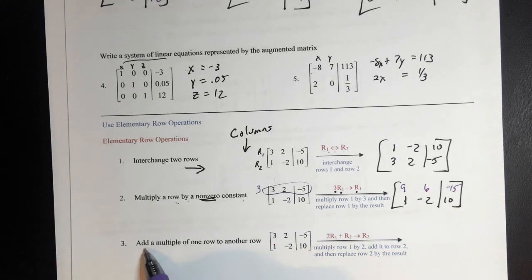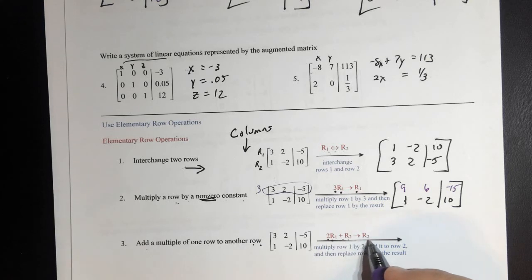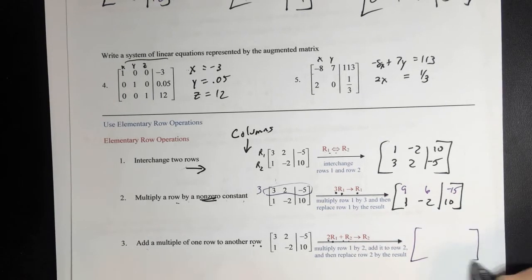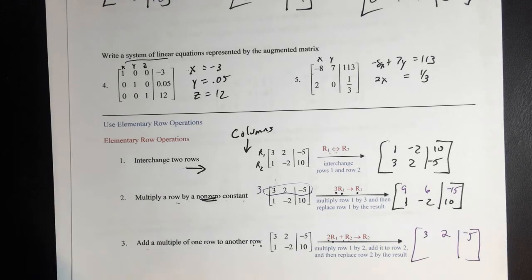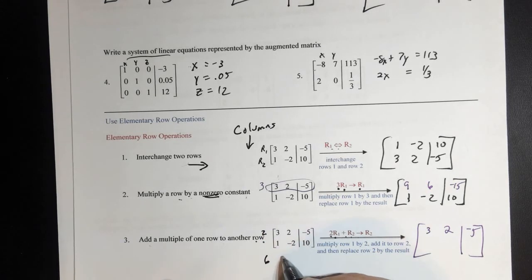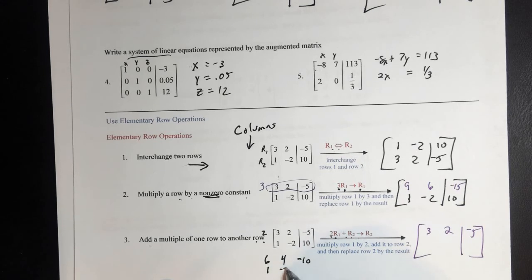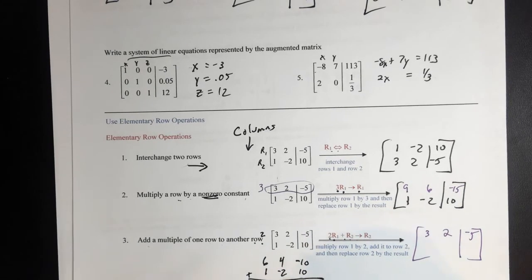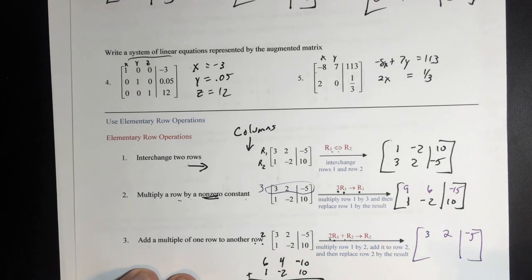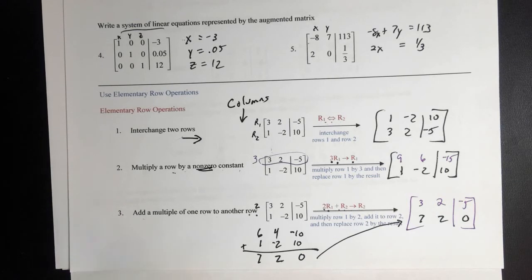Now, I can also add a multiple of one row to another row. All this says is: we're going to take 2 times R1, then add it to R2, and replace it into R2. Which means R1 is going to stay the same when we're done. We're going to multiply 2 times R1, so that's going to be 6, 4, negative 10. And then we're going to add it to R2, which is 1, negative 2, and 10. We're going to add them: 7, 2, and 0. And that's now going to become R2: 7, 2, and 0. Those are all your operations.